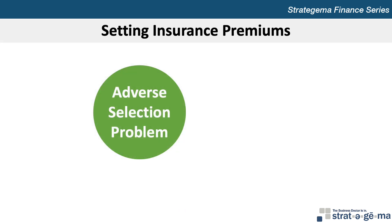When assessing the probability of a condition that will result in a payment to the insured, insurance companies rely on statistics about the general population. They also need to consider the behavior of the policyholders that can increase the likelihood of claims. The insurance industry faces an adverse selection problem, meaning that those who are most likely to need insurance are most likely to purchase it. As a result, insurance companies need to assess the probability and potential size of the claims made by people who obtain insurance rather than the claims made by the population in general, so they can set insurance premiums sufficiently high to reflect the likely claims by policyholders.